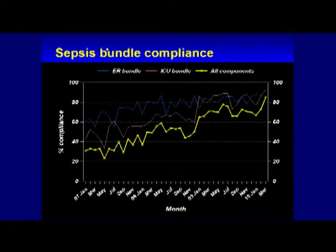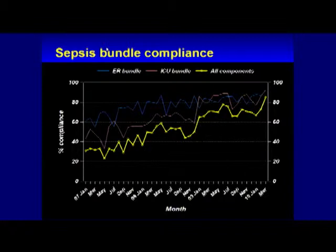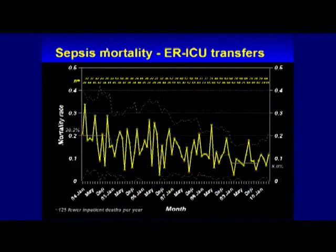They put together a bundle — moderately complex, 13 major elements. The blue line shows ER compliance over time, the red line is ICU compliance, and the yellow is total. It rises from about 30% compliance up to about 90% today. Nationwide mortality rates for sepsis range from about 20% to 50% — this is a deadly, deadly disease. When we started at Intermountain, we were among the best of the best with a 20.2% mortality rate. In the last three years, the rate has never gone above 8%.